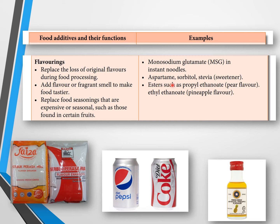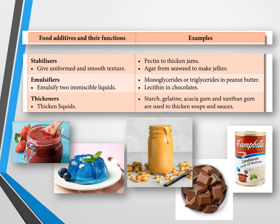More flavoring examples: aspartame gives a sweet taste; sorbitol or stevia is used in diet drinks like Diet Pepsi and Diet Coke. Esters are also used — propyl ethanoate gives a pear flavor, and ethyl ethanoate gives a pineapple flavor. You may draw the ester structure for propyl ethanoate.